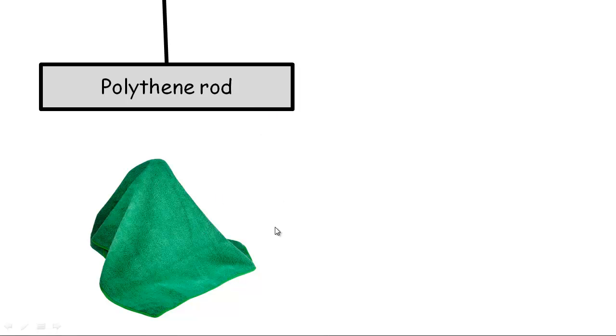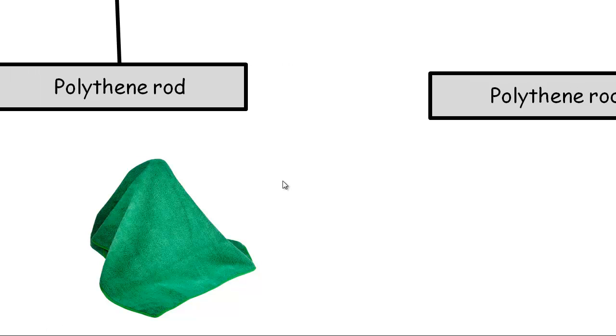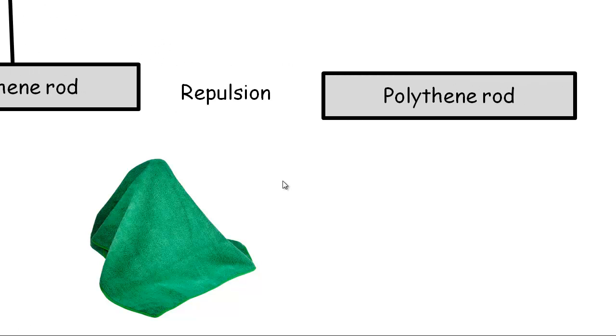And one of the other experiments you might do is you get another polythene rod and charge that as well. You give it a rub, and try bringing them together and see what happens. You suspend the one rod from a string, you bring the other polythene rod along, and you get repulsion. They don't want to be next to each other.